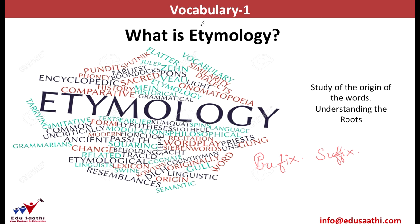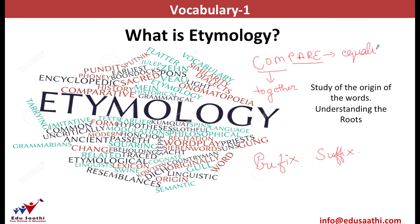For example, the word 'compare' may be broken into two small parts: 'com' and 'par.' Com means together and par means equality. Thus, compare means when certain things are kept together and the equality of these things is checked. We can break the word compare into two small roots and then interpret the meaning of this word based on our understanding of these roots.